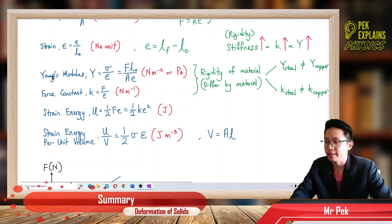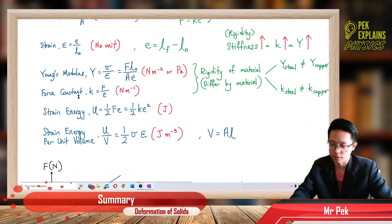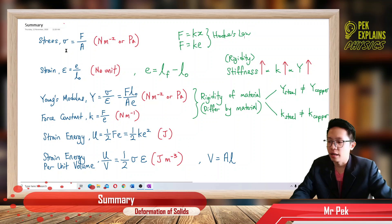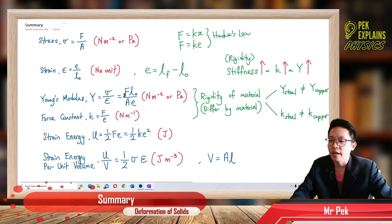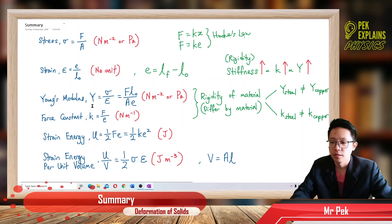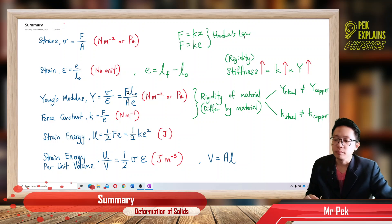Then we will learn about Young's modulus and also force constant — they are almost similar. Young's modulus is stress over strain. We substitute stress as F over A, and strain as e over L₀, and then rearrange to get FL over AE for Young's modulus. So the Young's modulus formula is stress over strain, or FL over AE.